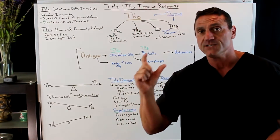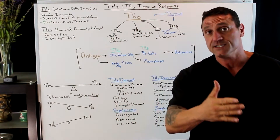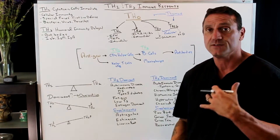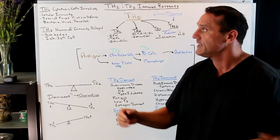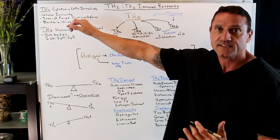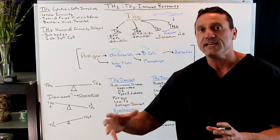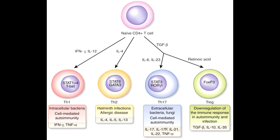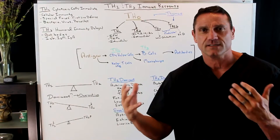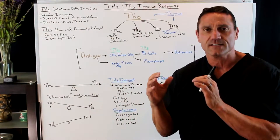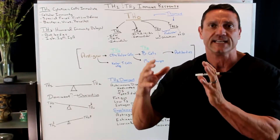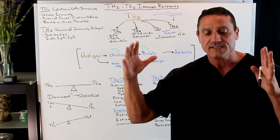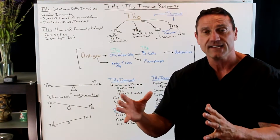The difference between the Th1 and the Th2 cells comes down to the immune response. The Th1 is the first line of defense — it's cytotoxic cells, an immediate response, cellular immunity. I always say this is like the special forces. This guards you against bacteria, viruses, and parasites, and what it does is it attacks a cell directly.